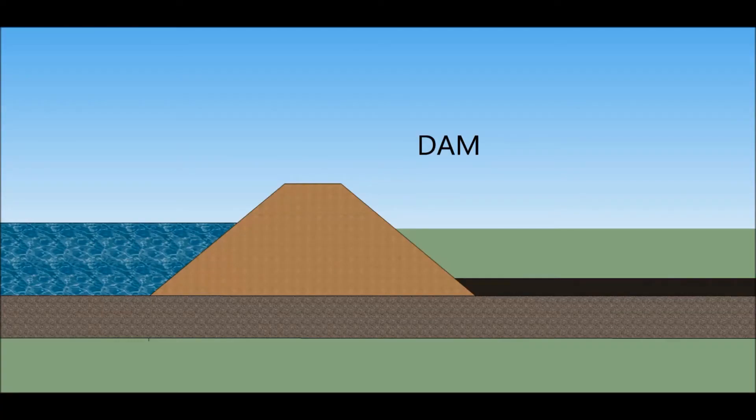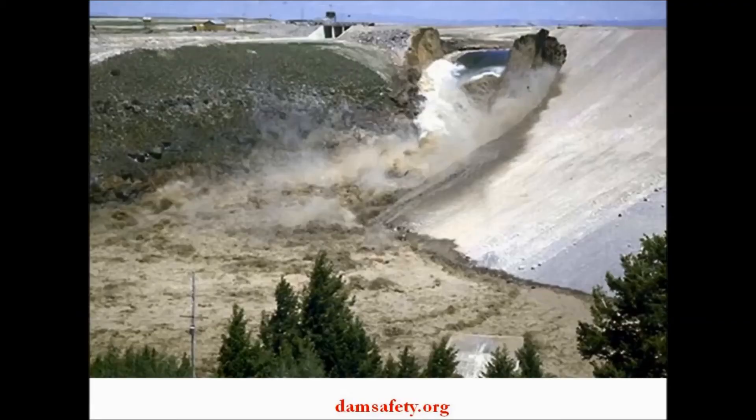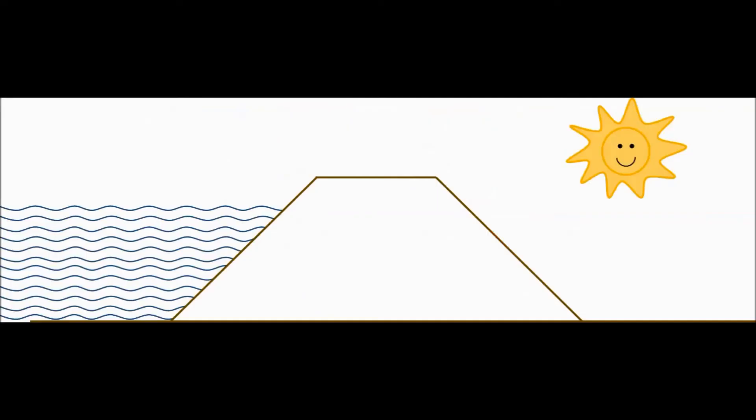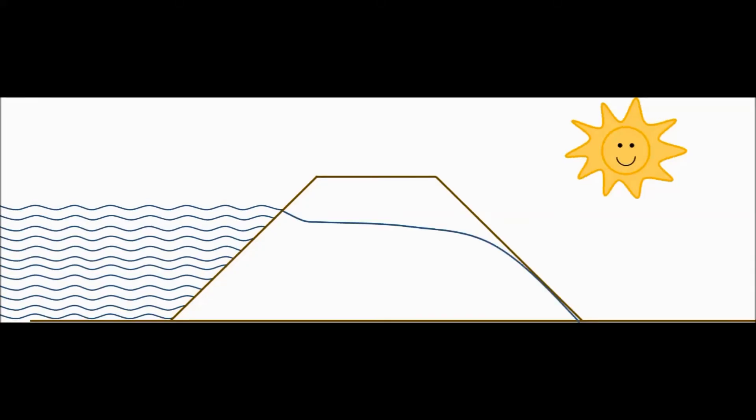Permeability can be linked to many engineering problems and solutions. One of them is dam failure by seepage. Over the last 50 years, approximately 20% of dam failures in the United States can be attributed to seepage. Seepage is the slow escape of liquid through porous material or voids.